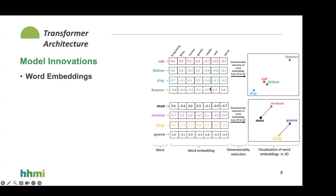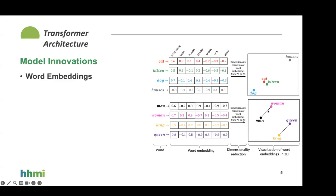Now let's look at what these word embeddings look like more closely. You can think of each column as having some semantic meaning, though in a real model these meanings will be abstract. The key idea is that the dot product of words that are similar will be higher than the dot product of words that are far apart. In the feature space, if words are related, they should be closer in the embedding space — so 'cat' and 'kitten' are closer in this 2D projection than 'dog' and 'houses,' though dog and house are actually similar on several axes like both being nouns.